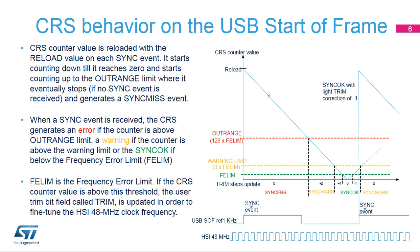If the counter value is between phelim and 3 times phelim, the trim bit is incremented or decremented by 1, depending on the counter direction. If the CRS counter is between 3 times phelim and 128 times phelim, the trim bit field is incremented or decremented by 2 trim steps.